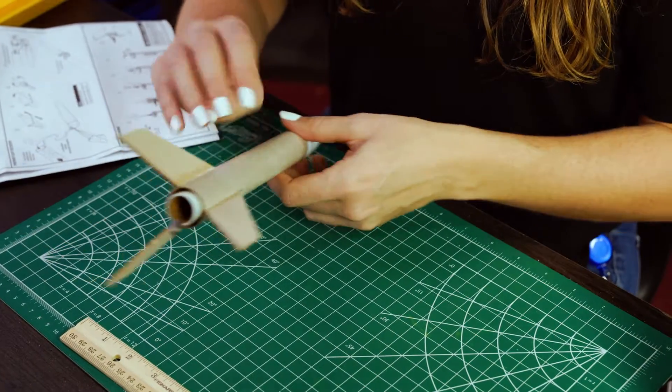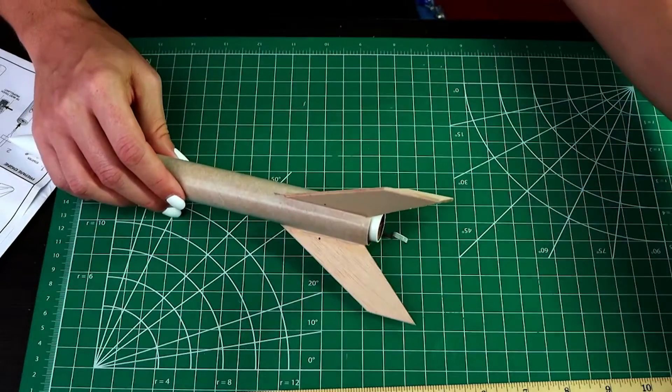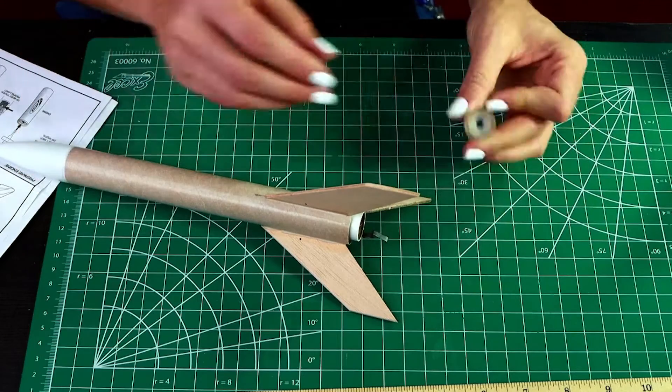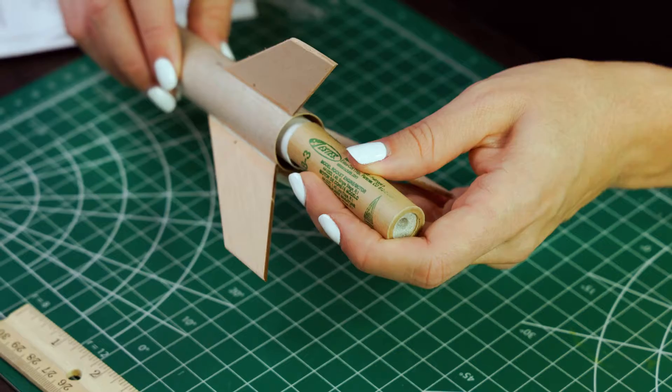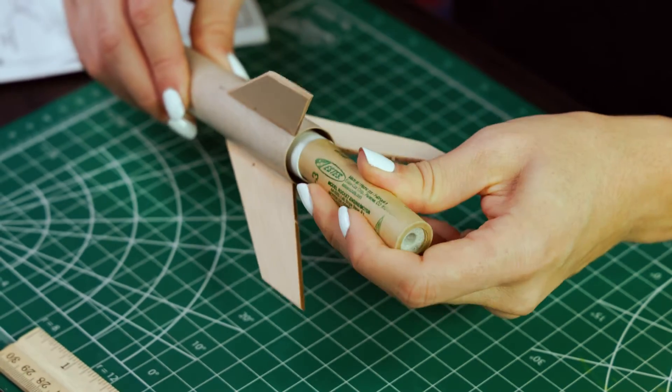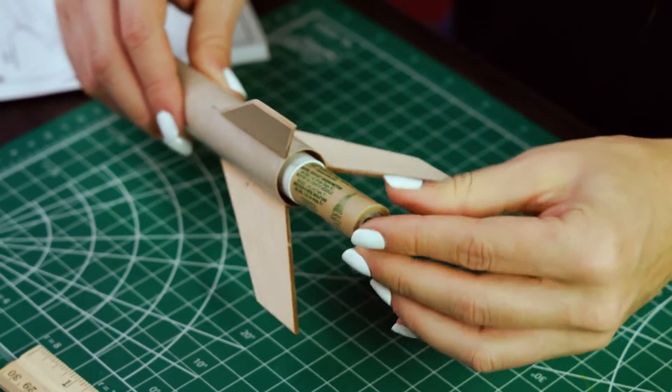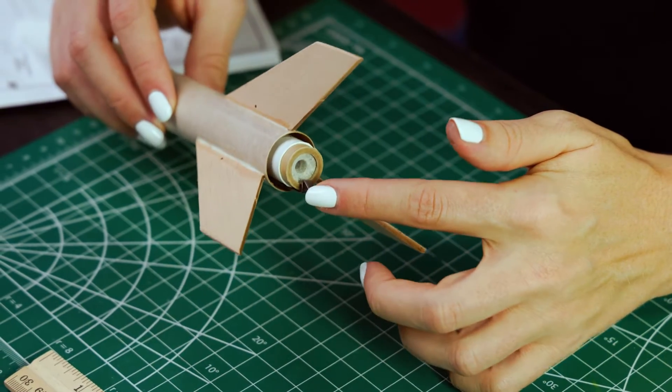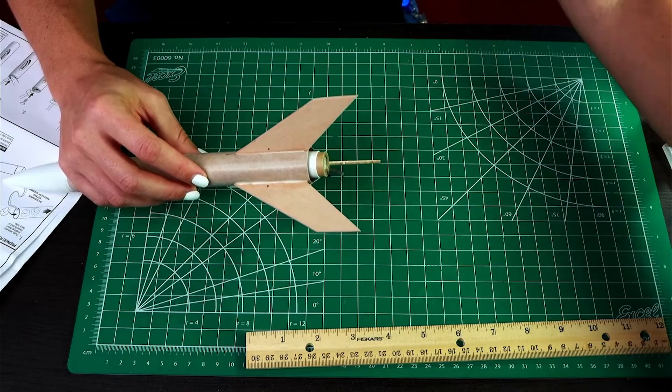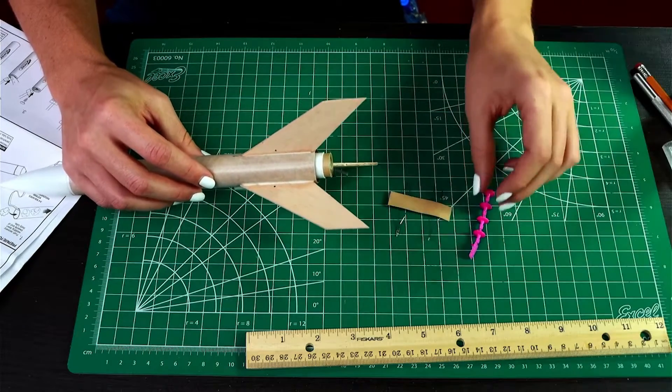Okay. Last thing is we need to install our engine. So this one, I've got the engine here. You want to make sure the nozzle side is out and just slide it right in there. Make sure the engine hook clicks over the top of that. Then we're going to install our starters and plug.